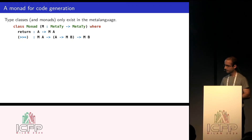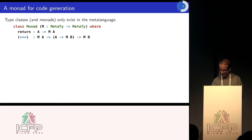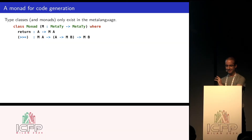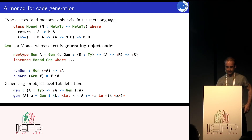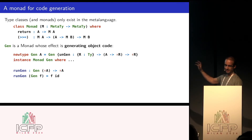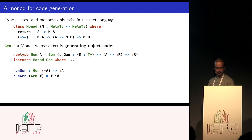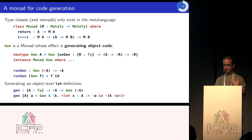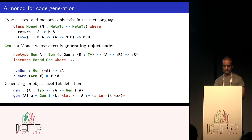Let's get to monads. The type class only exists in the meta-language, so we have a class for monads. The magic ingredient is that we have a monad whose side effect is generating object-level code - this is some kind of continuation monad. We have some monad which is called Gen. You can run a Gen action, and if you have a Gen action returning an expression, then you can run it and get an expression out of it. You have some particular code-generating actions in this Gen monad.